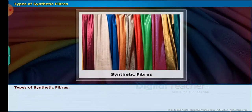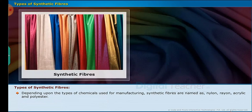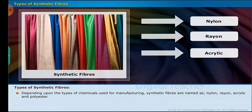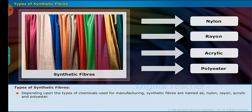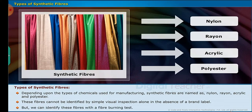Types of synthetic fibers: depending upon the types of chemicals used for manufacturing, synthetic fibers are named as nylon, rayon, acrylic and polyester. These fibers cannot be identified by simple visual inspection alone in the absence of a brand label, but we can identify these fibers with a fiber burning test.